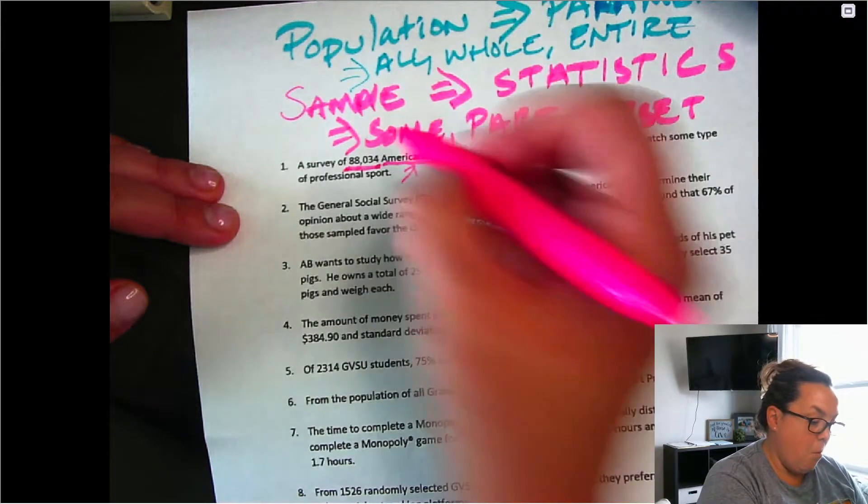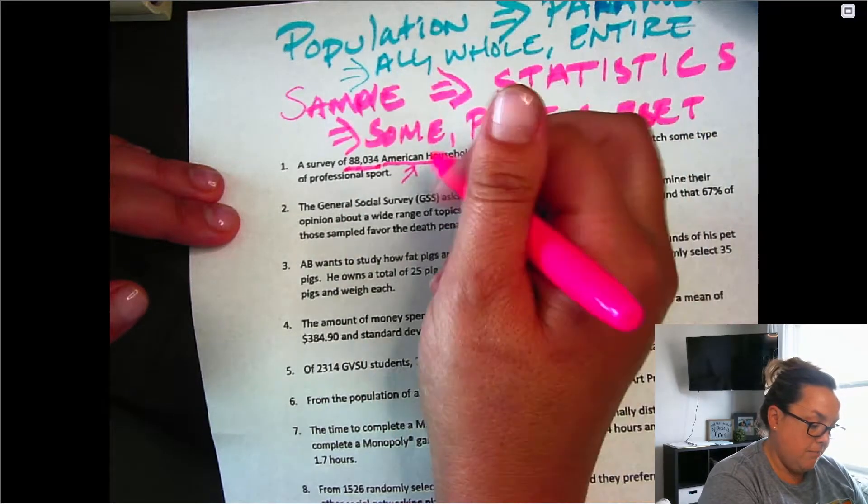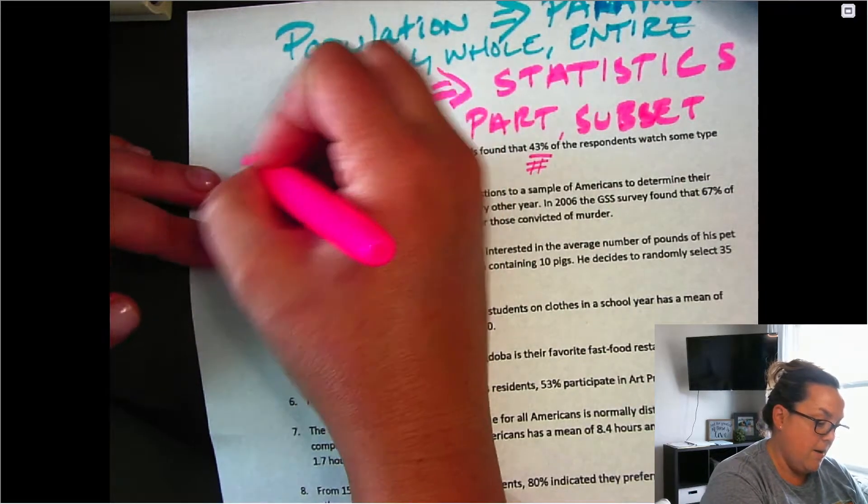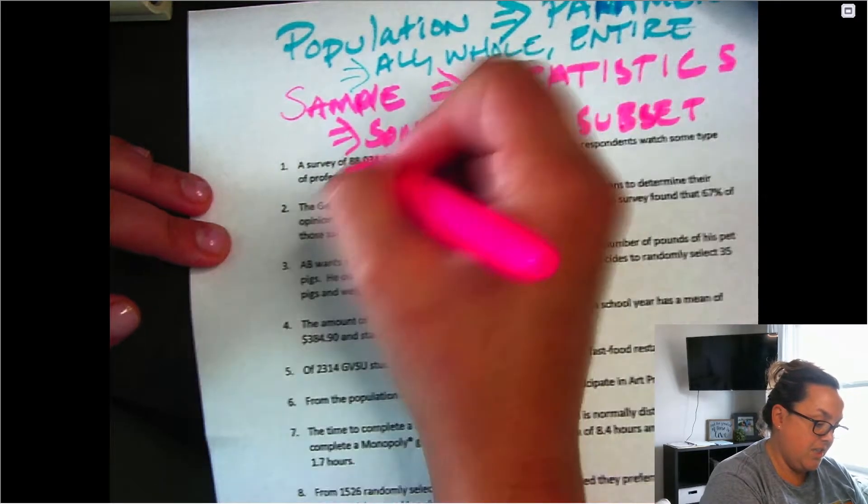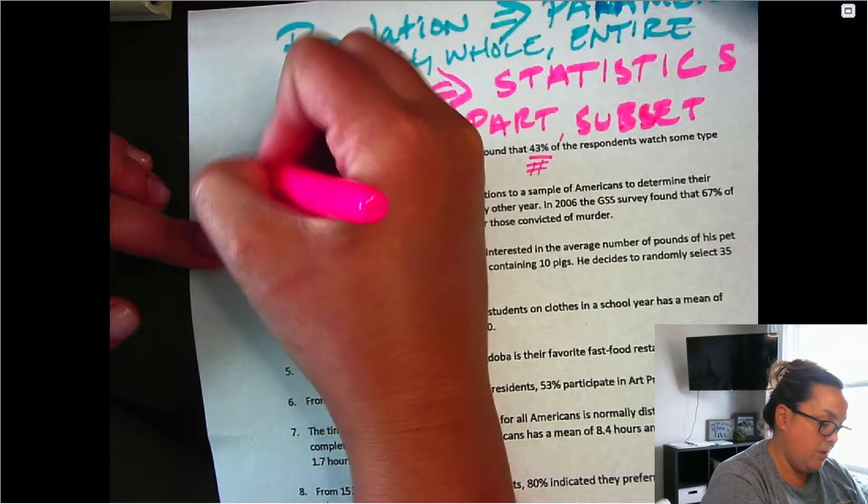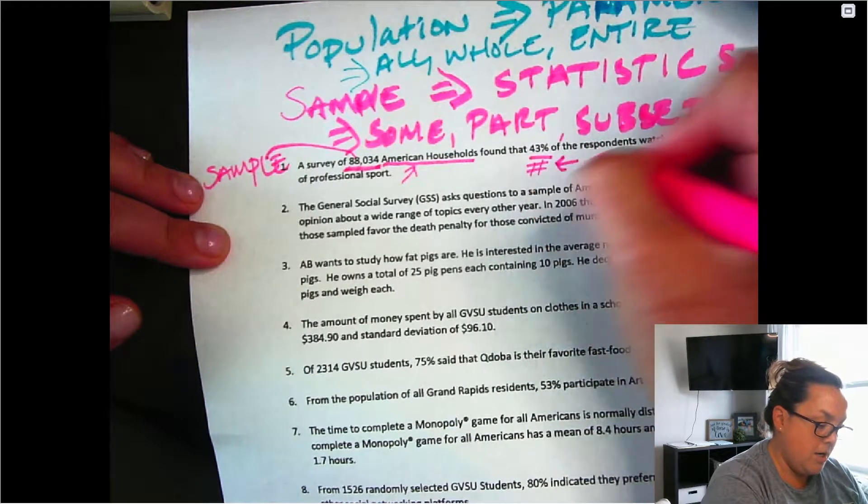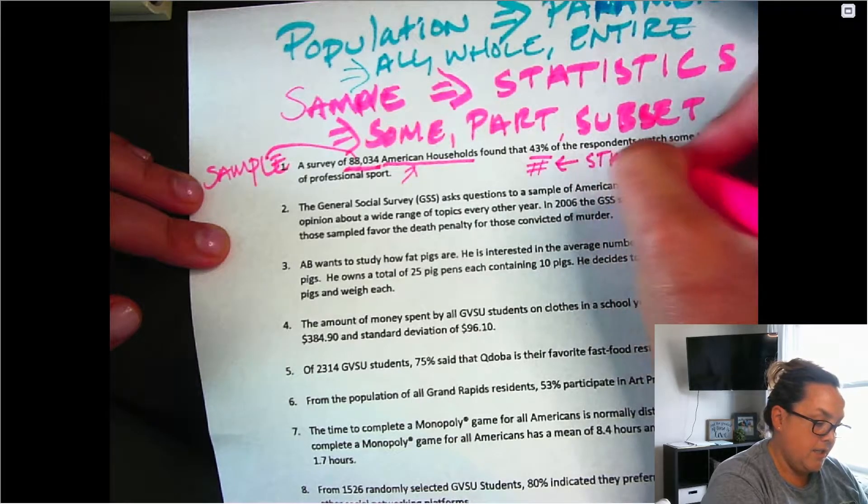Well, there are more than 88,000 households in America. So this is going to be a sample. So this smaller group right here is a sample, which means that the number referring to that group, this number is a statistic.